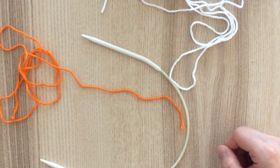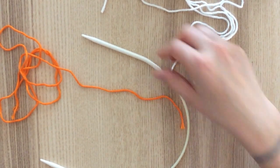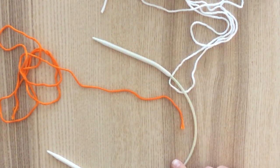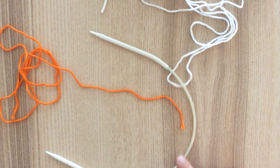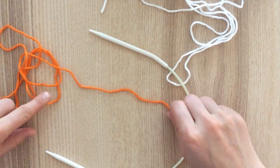In this one, I'm demonstrating the provisional cast on. In order to do the provisional cast on, you need your needles. I use circulars all the time, but I'm actually knitting back and forth, so of course straight needles work.